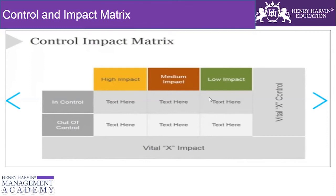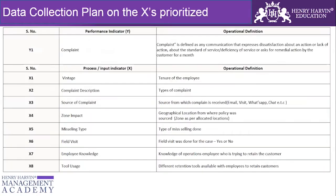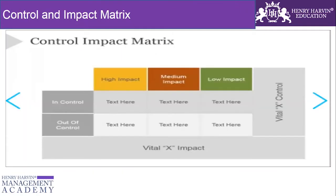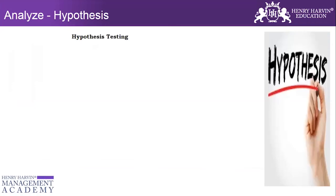Medium impact in-control and low impact in-control causes are lower priority as they will not yield as strong results. Our focus area is high impact and in control. However, we will also examine high-impact out-of-control causes — we park them for a while and try to work on them simultaneously. So we can use either the Cause and Effect Matrix or the Control and Impact Matrix for prioritization of causes.